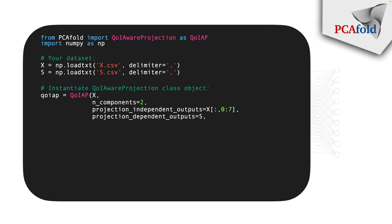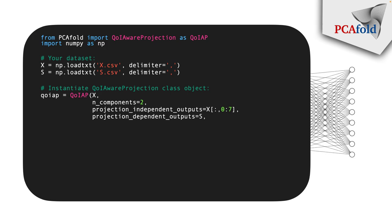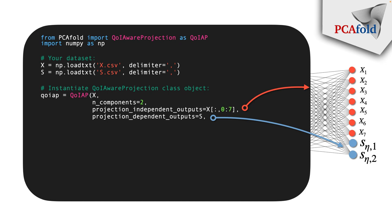Let me stop here for a moment and look back at the decoder output. The projection-independent outputs, in this case, are the first seven variables from the original dataset X — but you could also select these to be any important QoIs, even ones that do not come from the dataset X. The projection-dependent outputs will be the low-dimensional projection of the associated dataset S, which must have the same number of variables as X. Since we're computing 2D projections, there will be two projection-dependent QoIs — ones whose definition continually changes as the neural network is training.